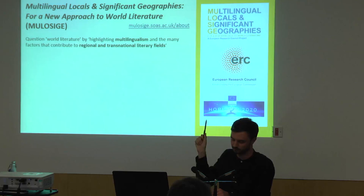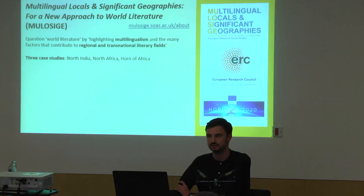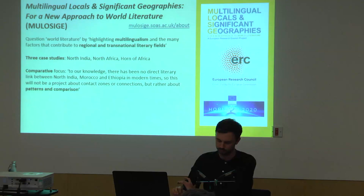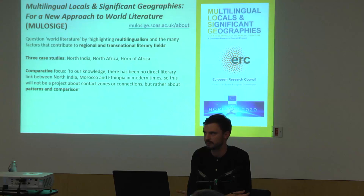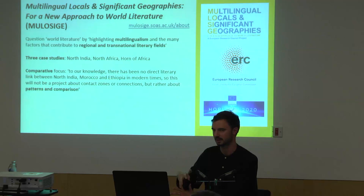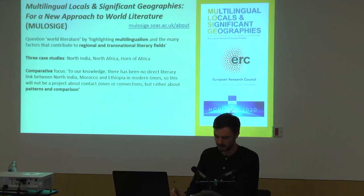In practice the project revolves around three sites — North India, North Africa, and the Horn of Africa — that we're analysing both individually and under a comparative focus. This emphasis on comparison is important as, to our knowledge, there's been no direct link between North India, Morocco and Ethiopia in modern times. This is a project about patterns and comparison, not about contact zones or connections. Unlike methodologies that privilege comparison between a centre in the global north and a periphery in the global south, this project focuses on south-south or south-south-south comparison between regions we feel have been previously under- or uncompared.